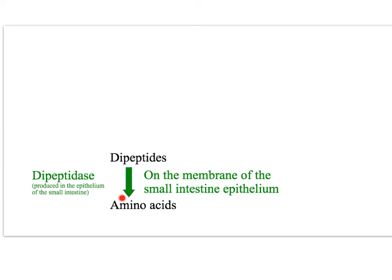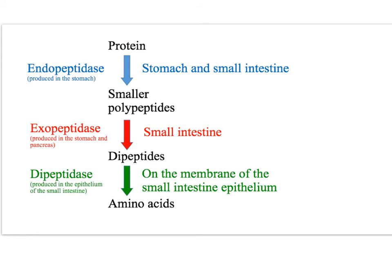The amino acids are then small enough to be absorbed. Here is a summary for the digestion of proteins: proteins are hydrolysed into smaller polypeptides by endopeptidase; smaller polypeptides are hydrolysed into dipeptides by exopeptidase; and dipeptides are hydrolysed into amino acids by dipeptidase.